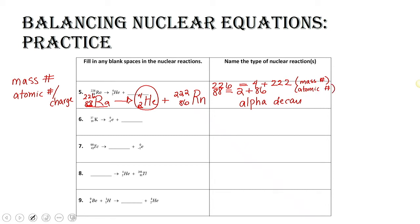Let's take a look at the second one. We've got potassium-37 with atomic number 19, and this equation says we end up with a beta particle. We need to figure out what our daughter nuclide is. 37 plus 0 — we have to be equal on both sides, so we know our mass number is going to be 37. We've got 19 and minus 1. Minus 1 plus what gives us 19? That's 20. Go to your periodic table — what has atomic number 20? Calcium. This is a beta particle, so we have beta decay.